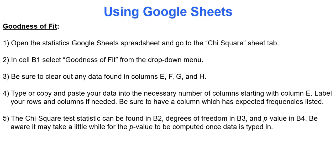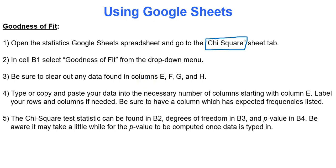In Google Sheets, we'll go to the chi-square tab and type our information — it will be given in the form of a table. We'll pick the appropriate type of test, which is goodness of fit, and then it'll give us the information we need.